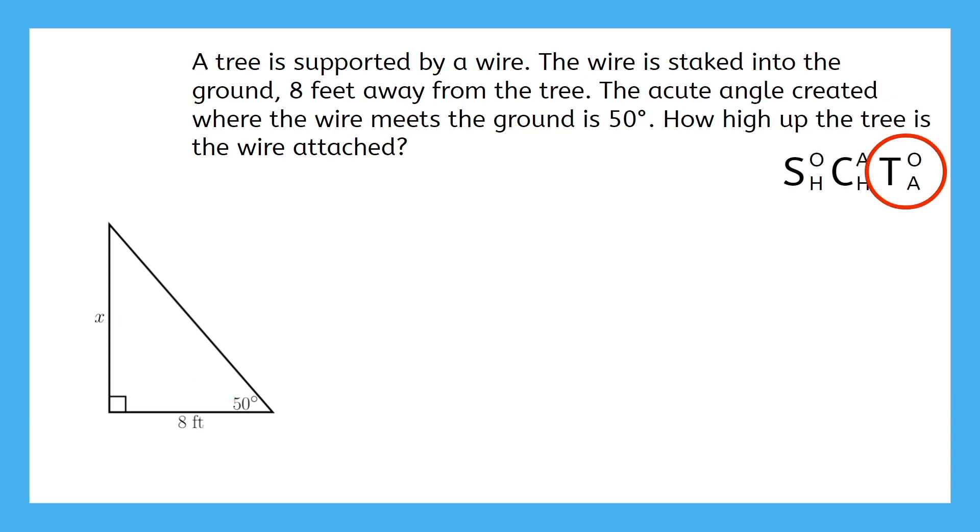We can set up an equation knowing that the tangent ratio is the opposite over the adjacent side. We solve by multiplying both sides by 8.